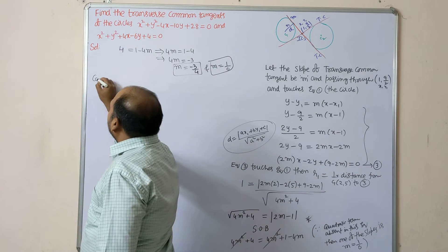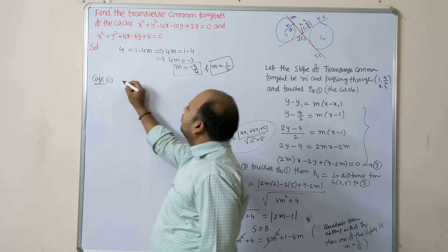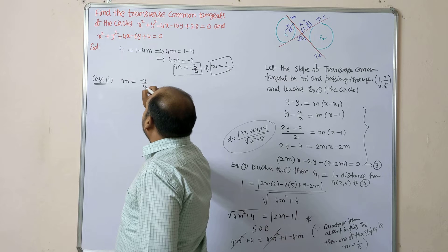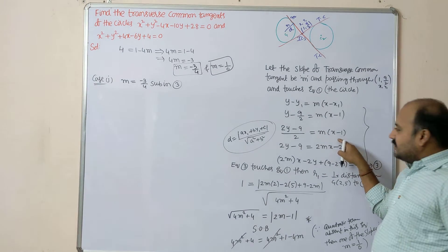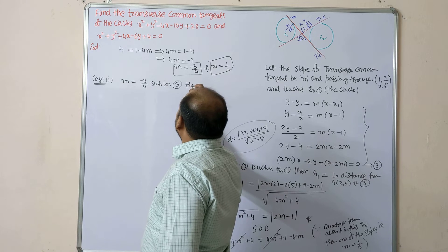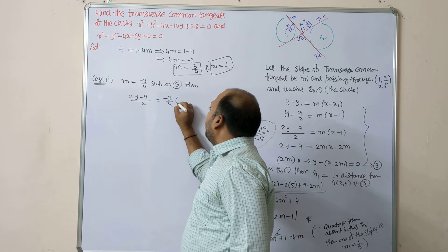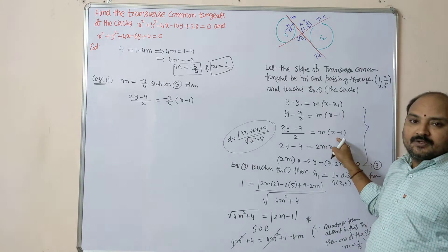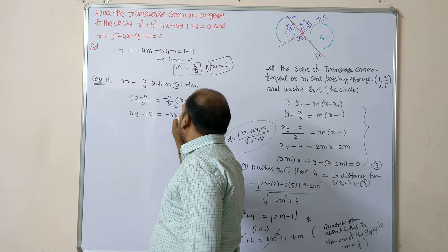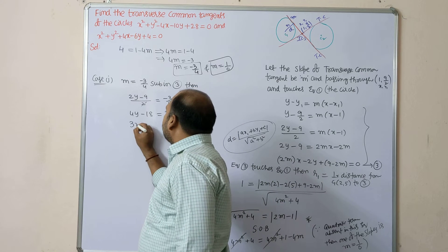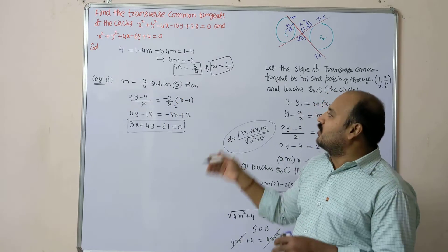Till this procedure you will get 5 marks including the figure. Case 1: m = -3/4. Substitute in equation 3: 2y - 9/2 = (-3/4)(x - 1). Cross multiplying: 4(2y - 9) = -3·2(x - 1), so 8y... Simplifying: 4y - 18 = -3x + 3, which gives 3x + 4y - 21 = 0. So the first transverse common tangent is 3x + 4y - 21 = 0.